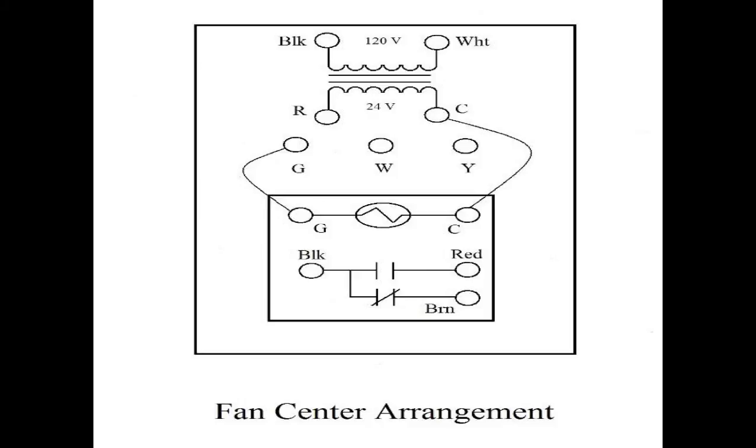Now, the key is that the blower motor, the high and the low speed, when it's wired properly, can never come on at the same time. Because your relay will never allow the red and the brown terminal to be powered together. One is normally open, one is normally closed. They can never be powered at the same time.